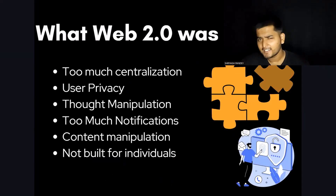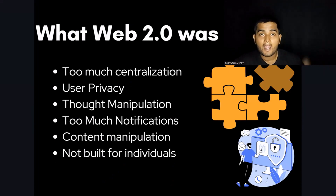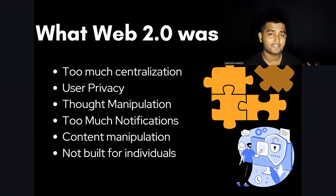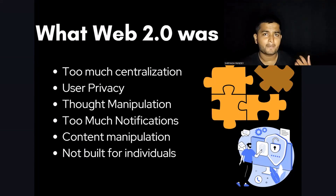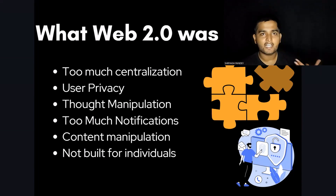If Web 2.0 had all these things, what was the need for Web 3.0? Let's learn about some of the limitations and disadvantages of Web 2.0. In the current era, you can go on the internet and find anything — purchase a toy, a book, watch a movie — everything with just a few clicks. This is the life of people. But at what cost?